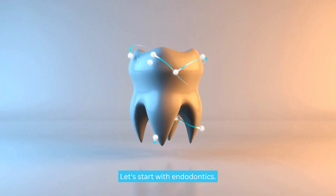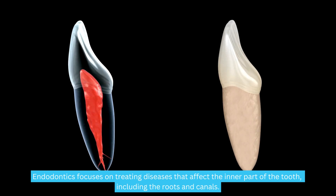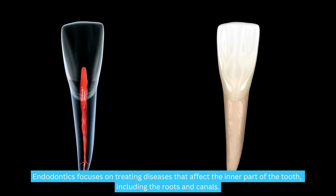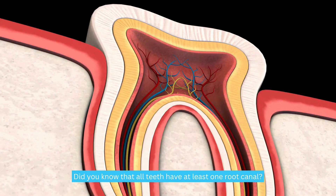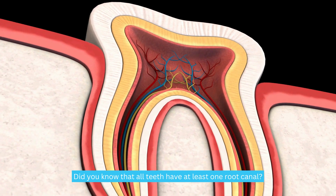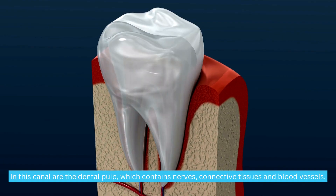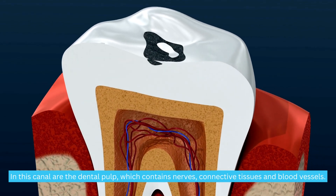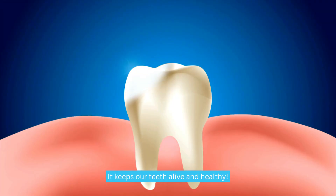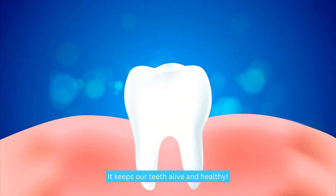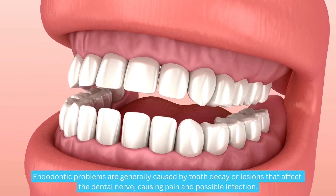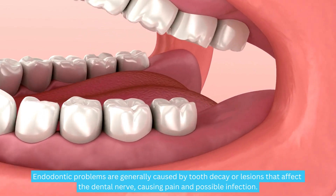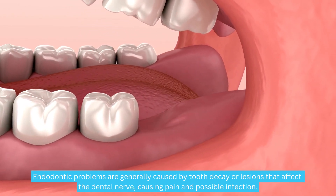Let's start with endodontics. Endodontics focuses on treating diseases that affect the inner part of the tooth, including the roots and canals. Did you know that all teeth have at least one root canal? In this canal are the dental pulp, which contains nerves, connective tissues, and blood vessels. It keeps our teeth alive and healthy. Endodontic problems are generally caused by tooth decay or lesions that affect the dental nerve, causing pain and possible infection.